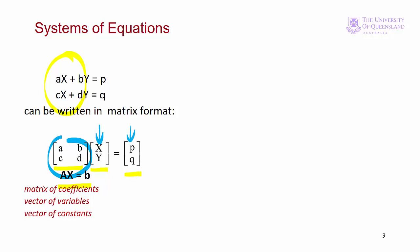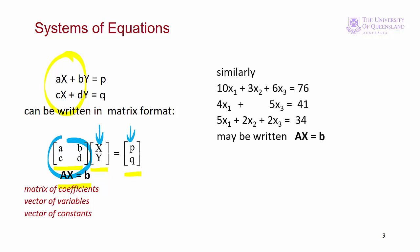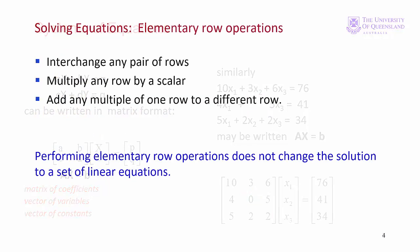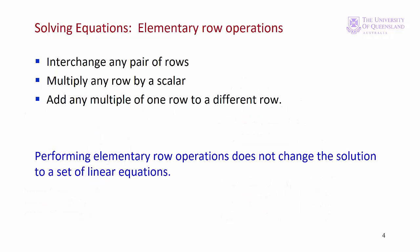Here's another example where the coefficients are numbers, converted into matrix notation. Note that where we have a variable missing from the equation, in this case x2, that's the same as having a zero coefficient in the matrix of coefficients. We formulate systems of equations in matrix notation because it makes it easier to solve them. There are a number of ways of doing this. The method we'll consider here is Gaussian elimination.